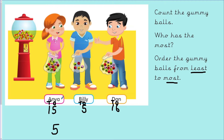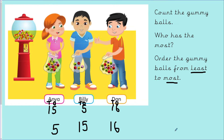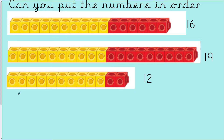Now we're going to compare 15 and 16 — they both have 1 ten, so we look at the ones column: 6 and 5. Is 5 smaller or is 6? Excellent — 5 is smaller, therefore 15 is smaller than 16. I'm going to write 15 down, and then my largest number is 16 at the end. I've now ordered the numbers from smallest to largest: 5, 15, and 16. So who had the most gummy balls — Anya, Billy, or Dan? Excellent — Dan had the most gummy balls!